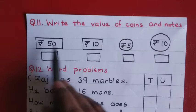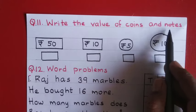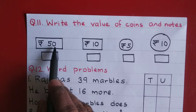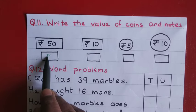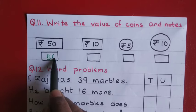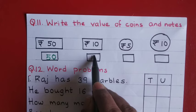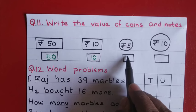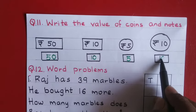Question number eleven: write the value of coins and notes. Notes means currency notes. Here you can see the fifty rupees currency note, so its value is fifty. The ten rupees note has a value of ten. The five rupees coin has a value of five. The ten rupees coin has a value of ten.